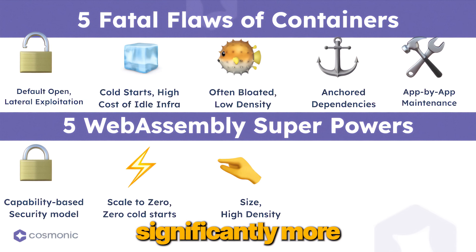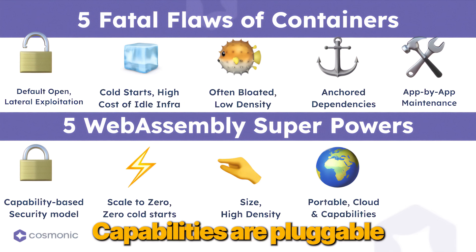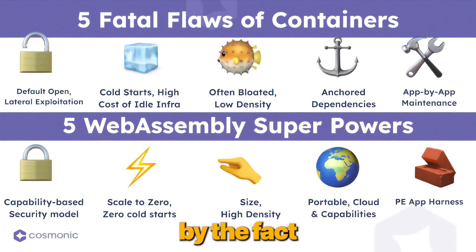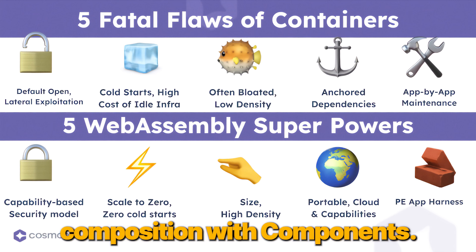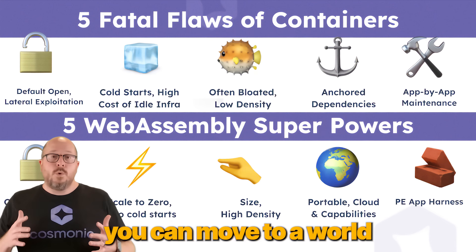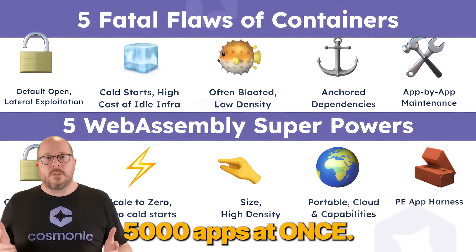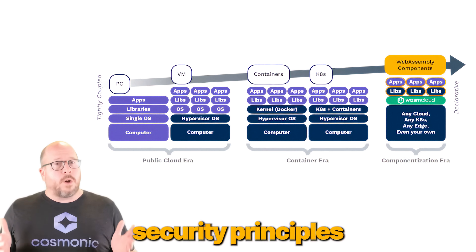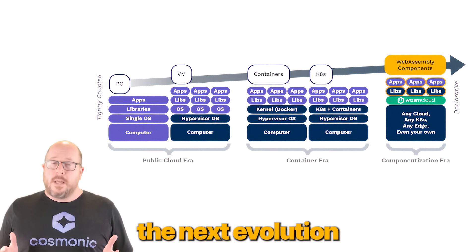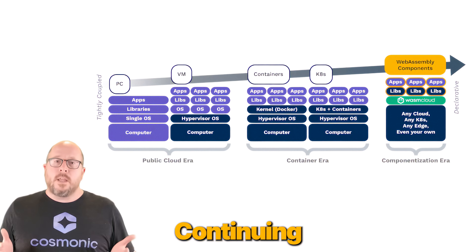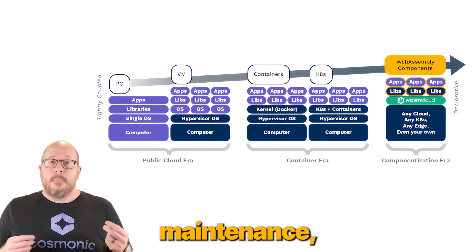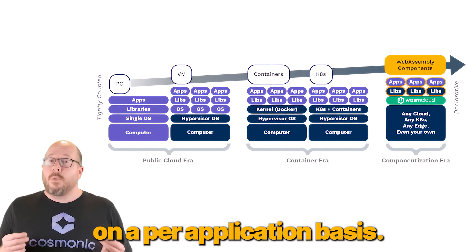When we have smaller components that can scale to zero with no cold starts, we can achieve significantly more dense, efficient, and cost-performant platforms. Capabilities are pluggable and therefore more portable, and less code means less to maintain. This is magnified by the fact that we can do runtime composition with components. Imagine moving from a world where 5,000 teams each fix the same CVE one time, to one where one team can fix 5,000 apps at once. WebAssembly components are aligned to timeless security principles: denied by default, least privilege, and immutable and declarative infrastructure. They represent the next evolution in platform efficiency, continuing the industry's long tradition of shifting capabilities down into the platform. Shift down reduces the implementation, maintenance, and operational load that teams carry on a per-application basis.